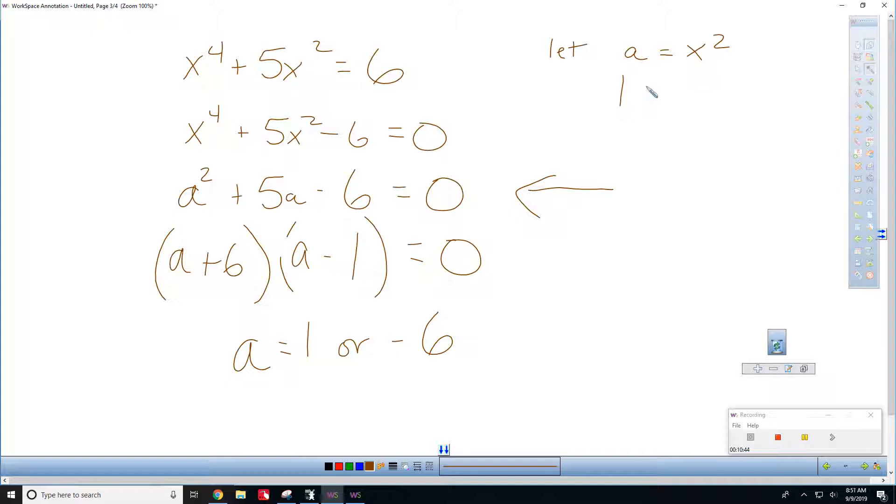So, 1 equals x squared. So, x could be plus or minus 1. And then, you have negative 6 equals x squared. Ah. So, x equals plus or minus 6i, the imaginary number. Okay. And that's your solution for that problem.